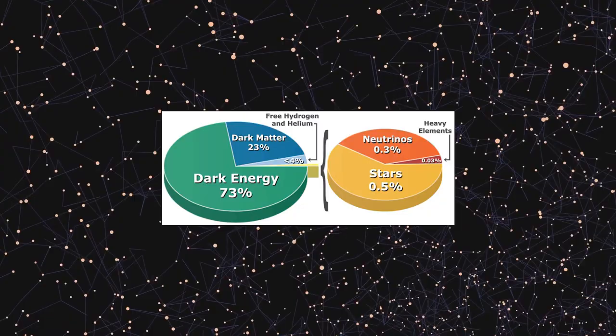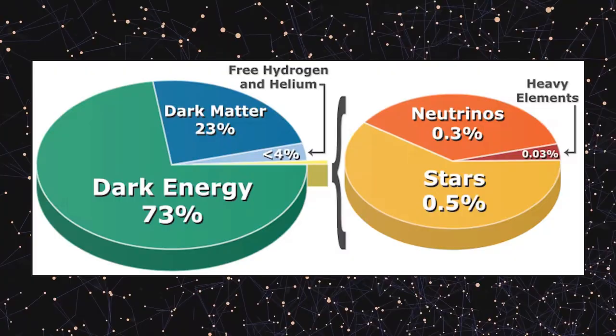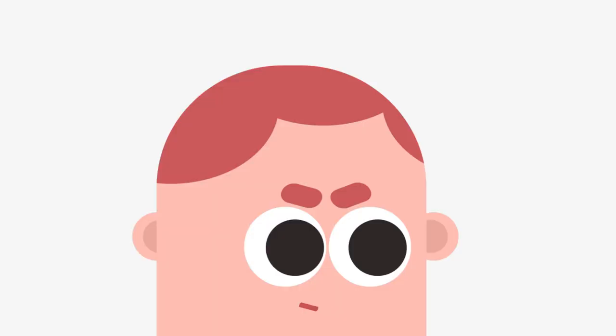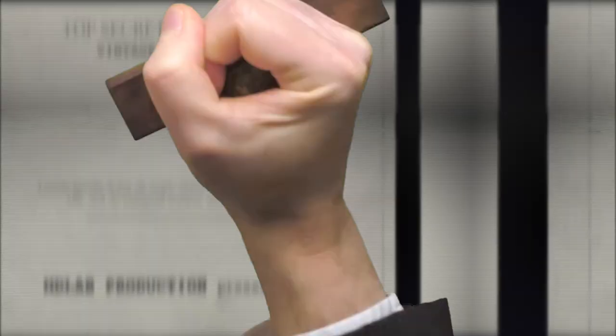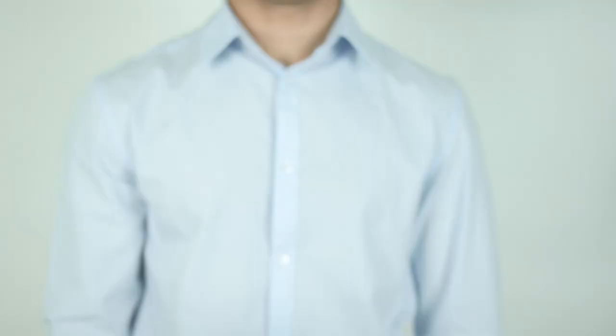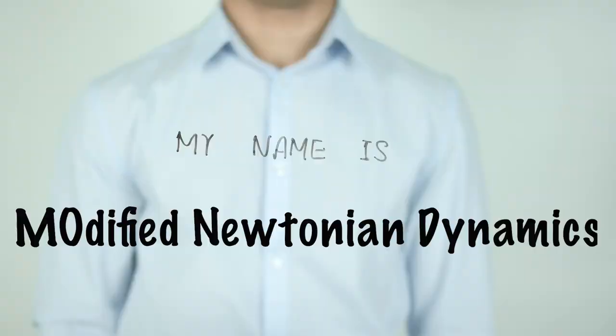We've discussed dark matter many times on this channel, including some interesting facts, like how there's roughly six times more dark matter than regular or luminous or baryonic matter, and how nobody really knows what dark matter is, or if it is. We've even discussed alternatives to the dark matter paradigm — alternatives that don't involve any form of particulate matter whatsoever. These go by different names, but one we've talked about is so-called modified Newtonian dynamics — I say MAND, you say MOND.